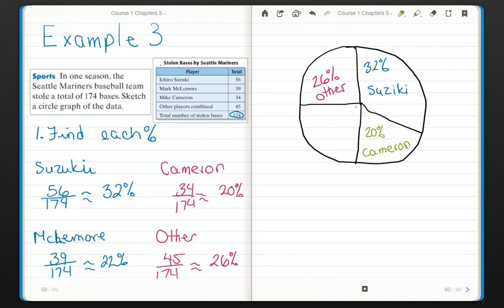And that leaves this piece here, which is a little bit less than a fourth, which is going to be McLemore at 22%. So here's my circle graph.